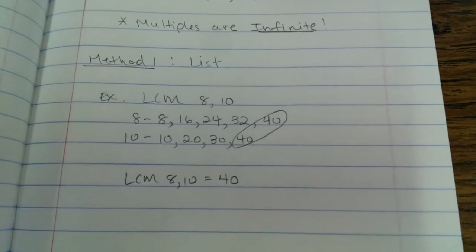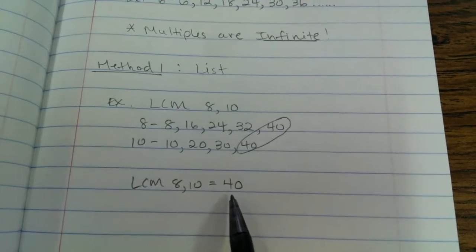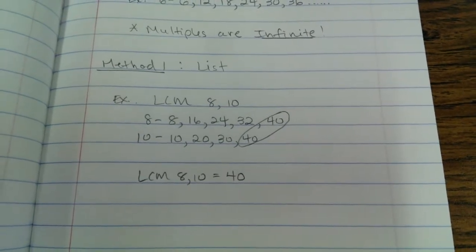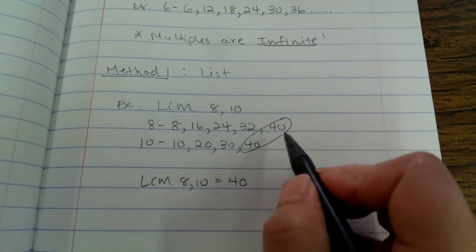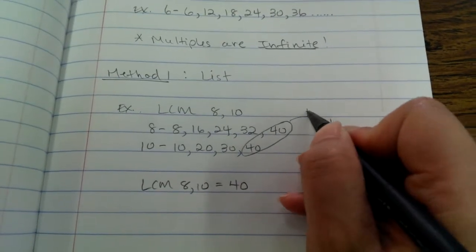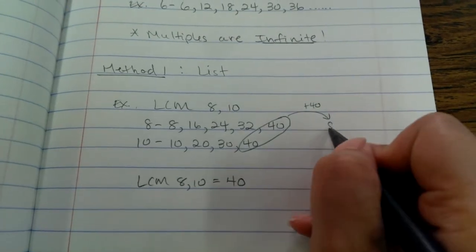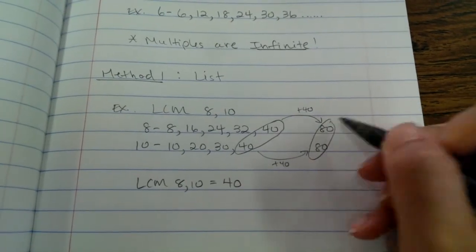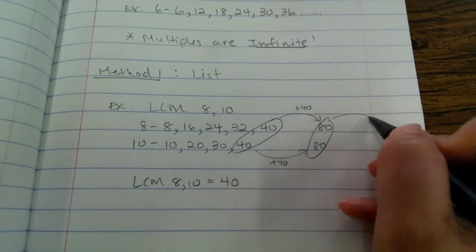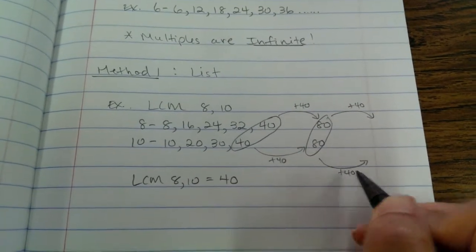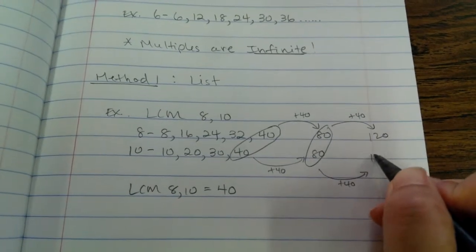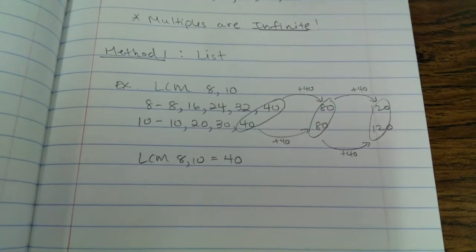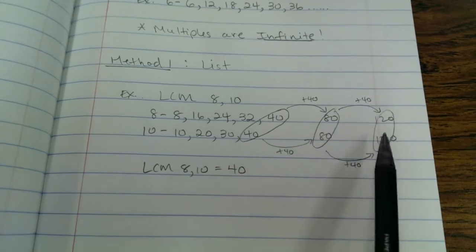There is a trick to finding the next common multiple. If you know the least common multiple is 40, that means every 40 they're going to have one in common. So if I wanted you to list the first three multiples they have in common, all you have to do is find the least common multiple, and then add 40 each time. So 80 would be the next common multiple, and then 120 after that. The first three common multiples of 8 and 10 are 40, 80, and 120.